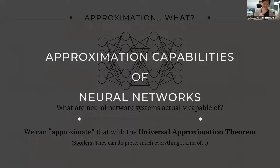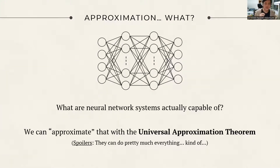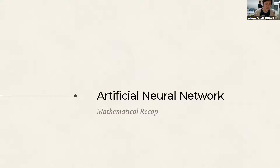The first question you might have is: approximation of what? What we want to approximate is what neural network systems are actually capable of. We can characterize that with the Universal Approximation Theorem, which is the main theorem we're going to be discussing in this presentation. Spoilers — artificial neural networks can do pretty much everything, kind of. But first, we need to recap on the artificial neural network mathematically.